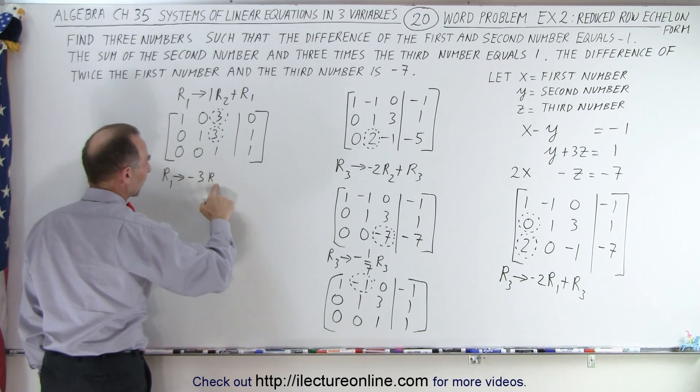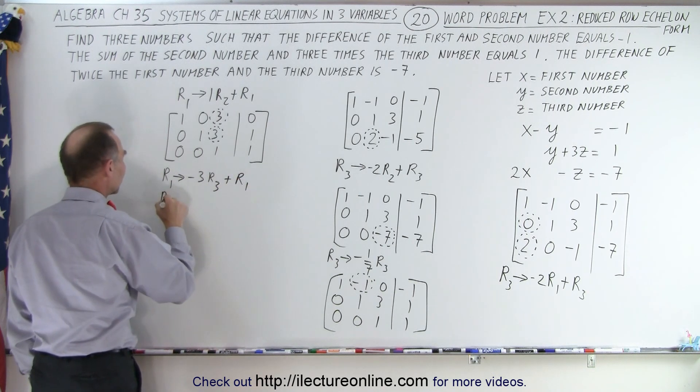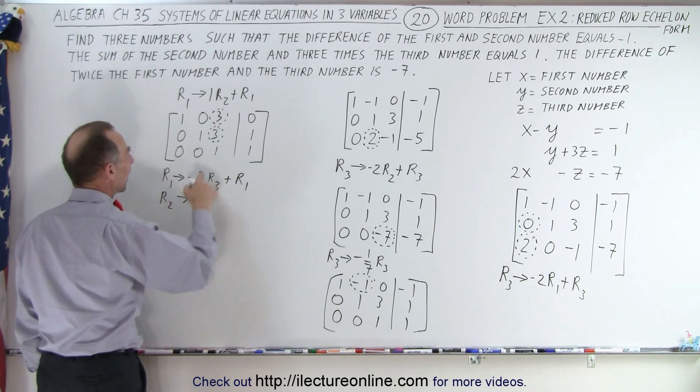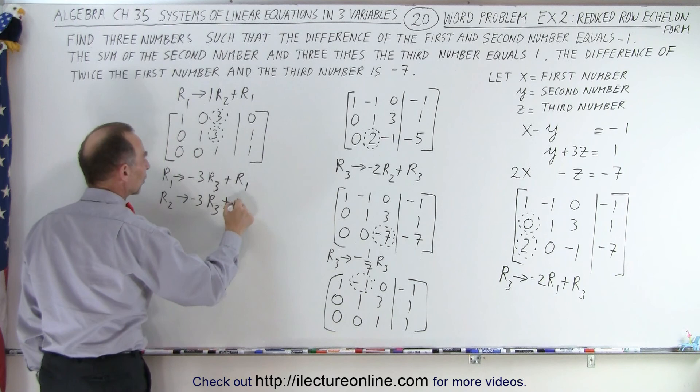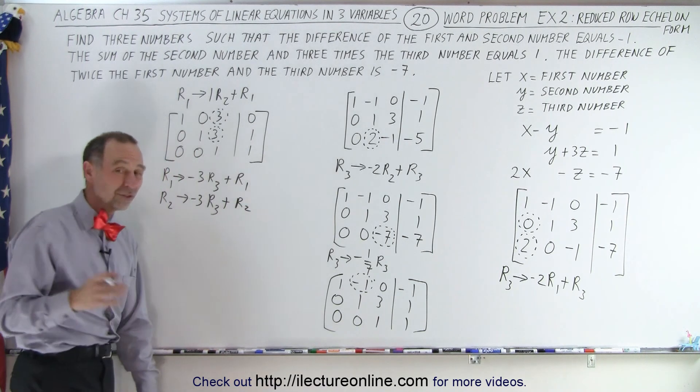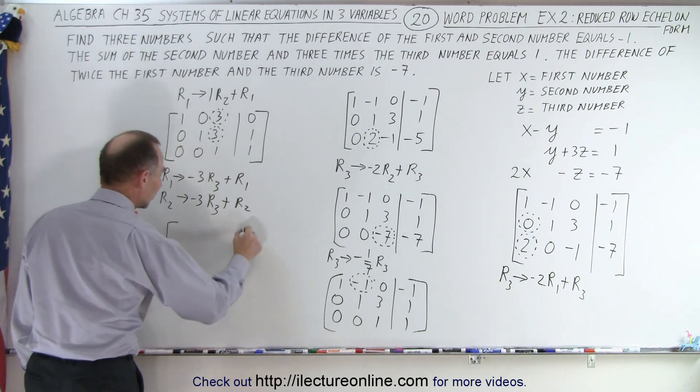Add it to row one. And we're going to take the second row and replace it by the negative of that number, which is negative three again, times the row with the one in it, which is row three, and add it to row two. So we're basically doing the same thing with row one and row two. When we do that, we get the following result.